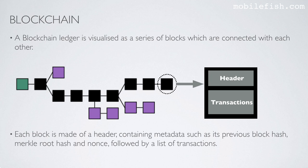Each block is made of a header containing metadata such as its previous block hash, Merkle root hash and nonce, followed by a list of transactions.